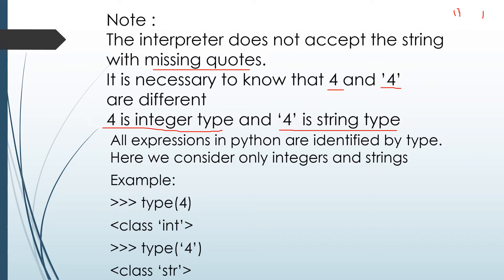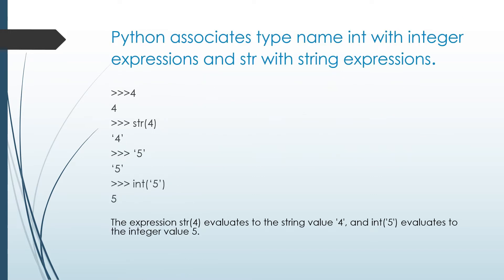For example, type(4) — where 4 is an integer — returns an output of int. And type('4') in single quotations, which is a string, gives an output of class str. The built-in int() function creates an actual integer object from a string that looks like an integer, and the str() function creates a string object from digits that make up an object.